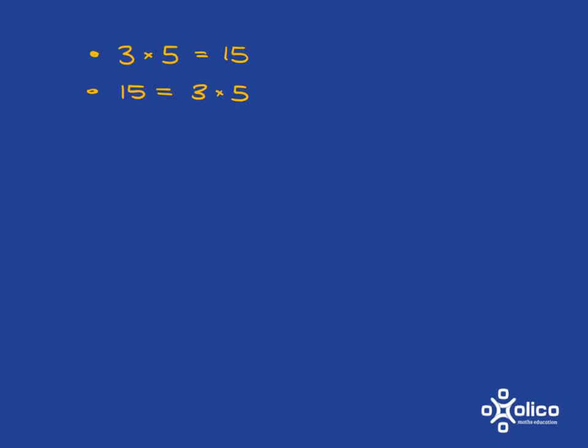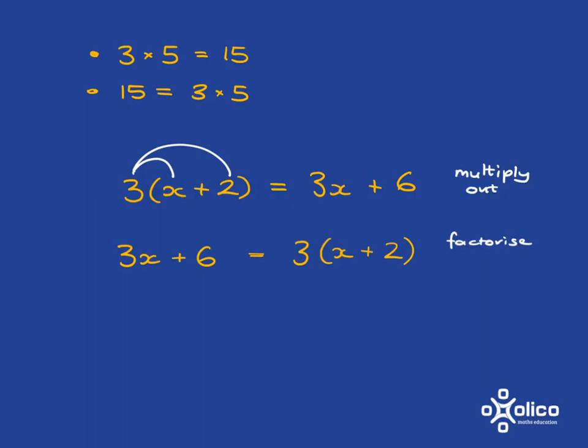Here is multiplying out when you're dealing with algebra. We know that to multiply out here we use our distributive law and so we get 3x plus 6. But we could equally well have been given 3x plus 6 to start with and be asked to factorize it. In this case we want to turn it into two things that are multiplied together, and in this case it'll be 3 multiplied by x plus 2. So what we have are two processes: multiplying out and then the reverse process of multiplying out which is called factorizing.